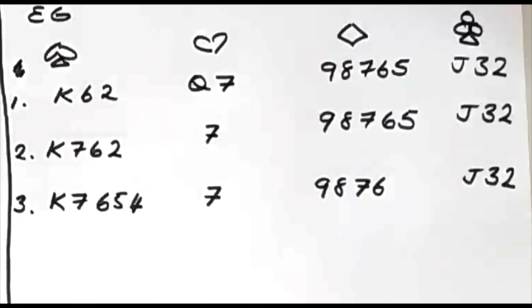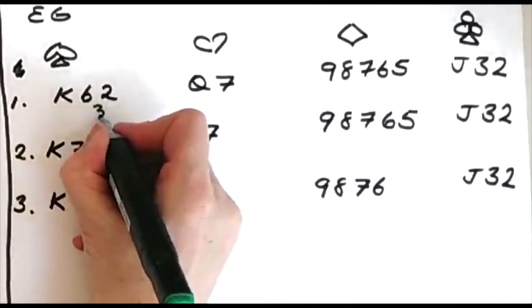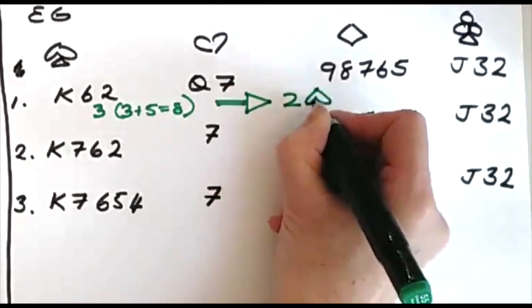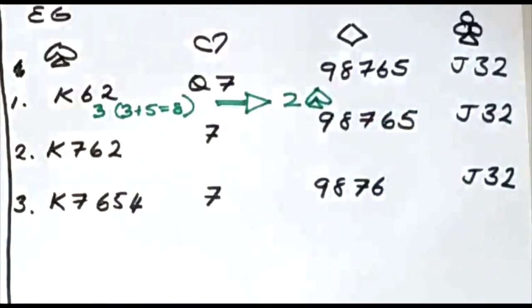You should now bid to the level of fit. You have three. Three plus five is eight. And eight trumps is eight tricks, so bid two spades.